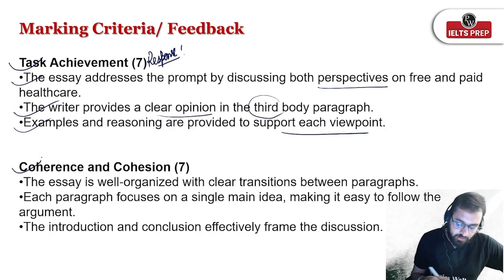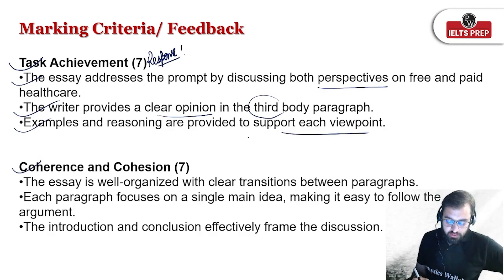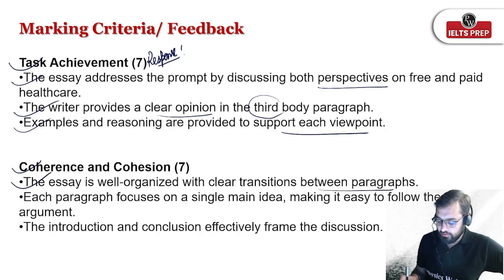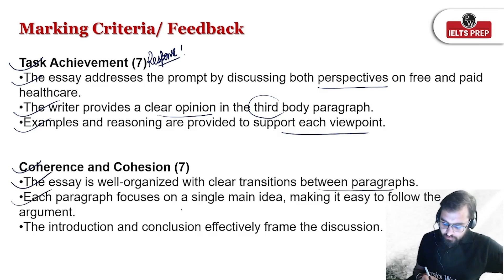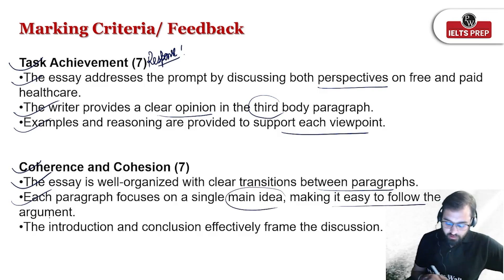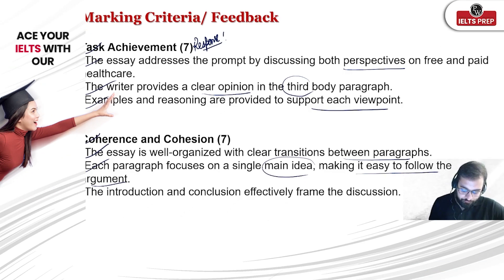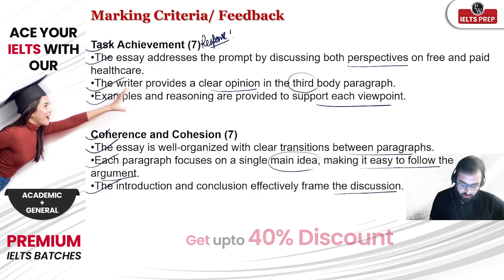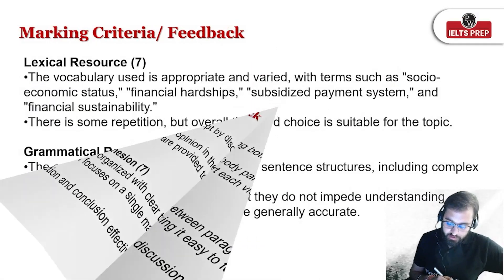The second parameter is Coherence and Cohesion — it also looks like 7. Why? The essay is well organized and there is clear transition between the paragraphs. Each paragraph focuses on a single main idea, making it easy to follow the argument. The introduction and conclusion effectively frame the discussion, which was a requirement of the task.